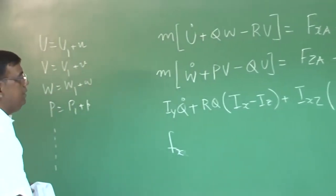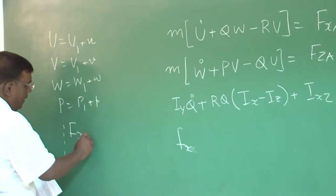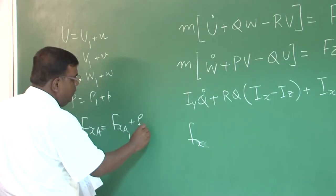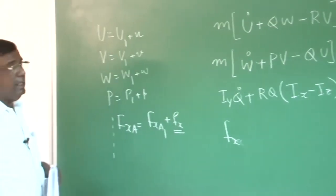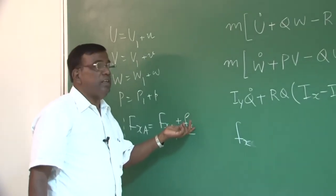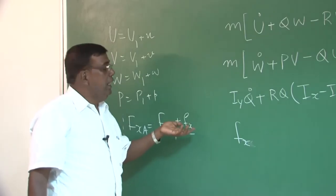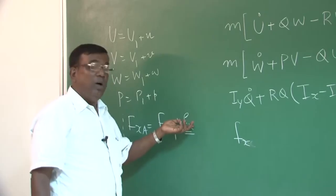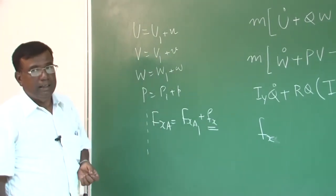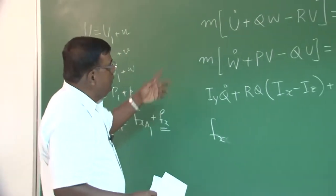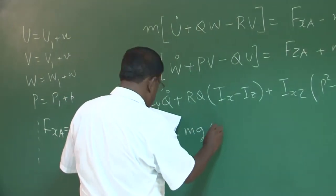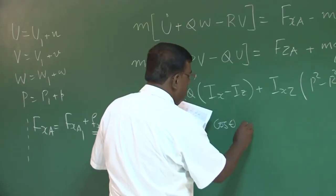Here, Fx is the perturbed aerodynamic force. Ideally it includes perturbed aerodynamic force plus perturbed thrust force, but we focus on the aerodynamic part, knowing we can extend the analysis to thrust similarly. So the derived equation is: Fx − mg·θ·cos θ₁ = m·u-dot.